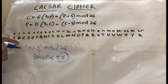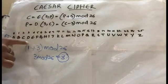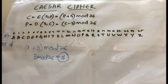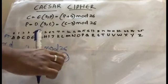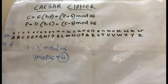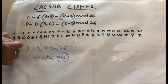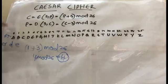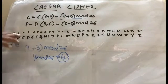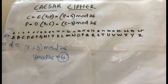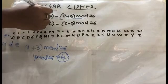For B, its number is 1, so 1 plus 3 mod 26 equals 4 mod 26, which is 4 — the alphabet at position 4 is E. For C, you get position 5, which gives F. So A→D, B→E, C→F, and so on.